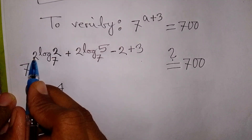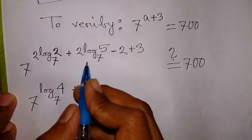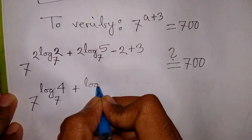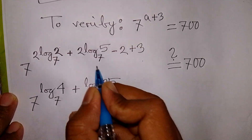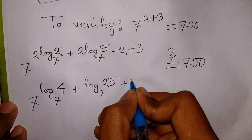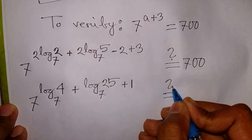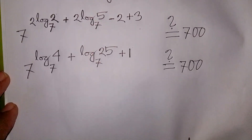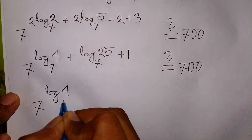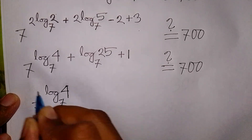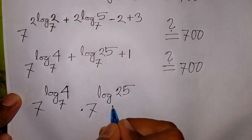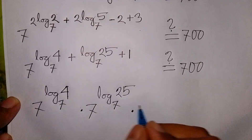We use the property that 2 times log₂(base 7) moves to become log of 2 squared, which is log 4 base 7. Similarly, 2 log₅(base 7) becomes log of 5 squared, which is log 25 base 7. Then, minus 2 plus 3 gives plus 1. We apply the exponential rule to get 7 to the power log₄(base 7), times 7 to the power log₂₅(base 7), times 7 to the power 1.